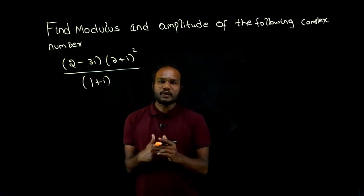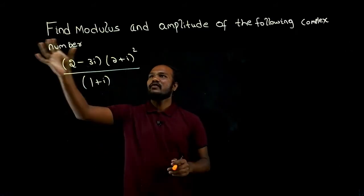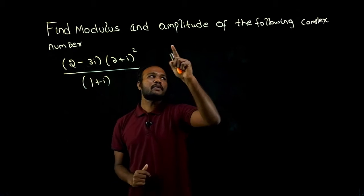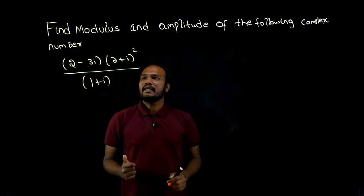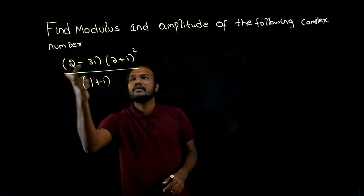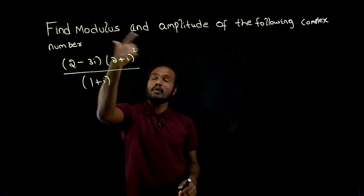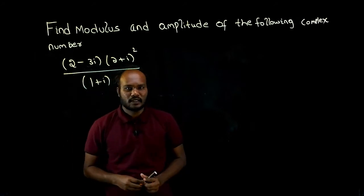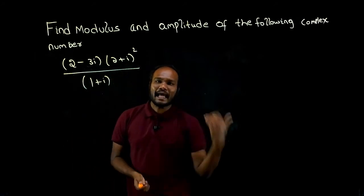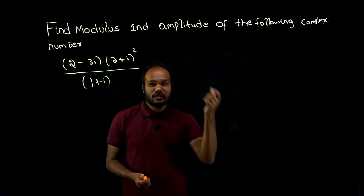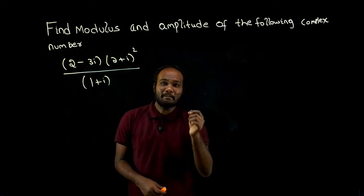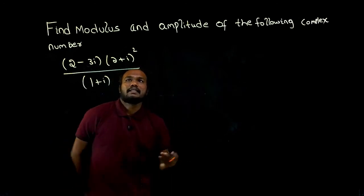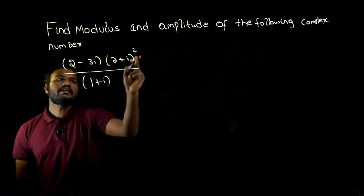What is given in the question? We have to find the modulus and amplitude of the complex number. There is a complex number here, a complex number whole square, and another complex number. To find the amplitude and modulus, we have to convert this question into the form a plus ib. So let's do that.